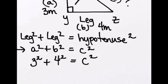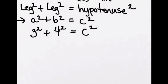Then we'd do some basic algebra to this equation. Three squared plus four squared equals C squared. We'd simplify. Three squared is nine, plus four squared is sixteen, and that equals C squared.